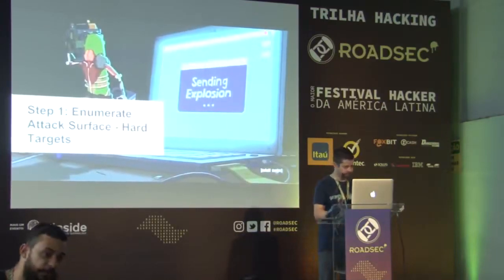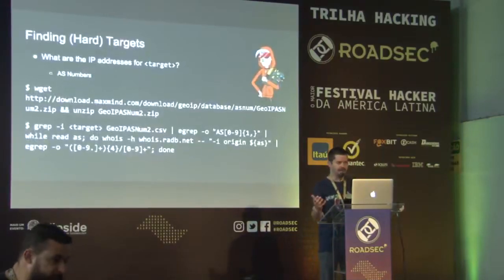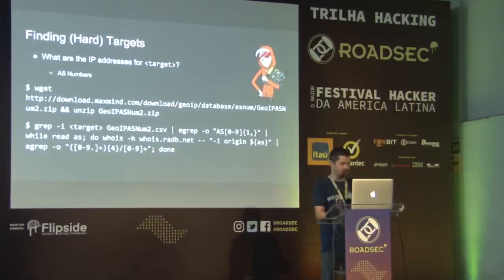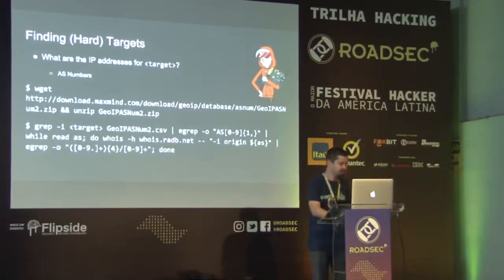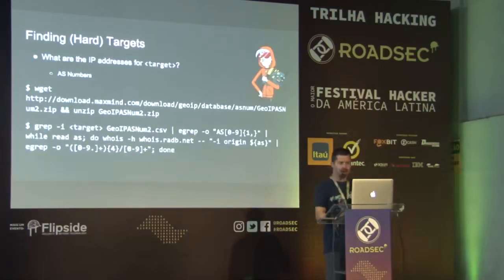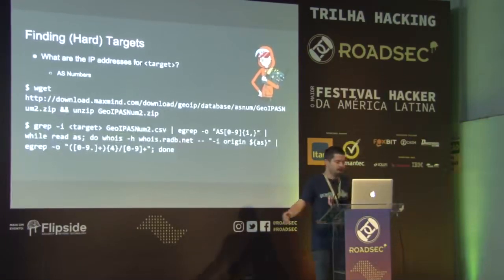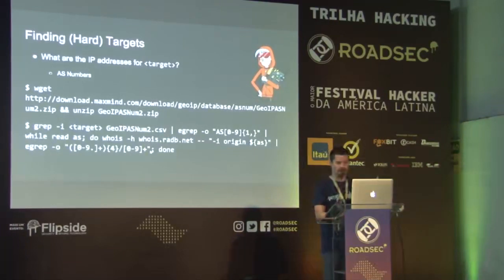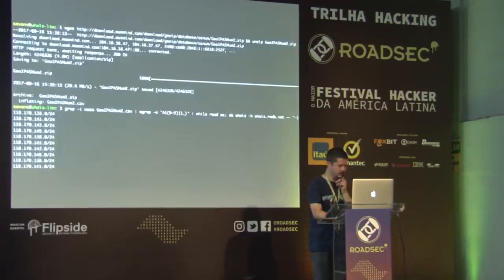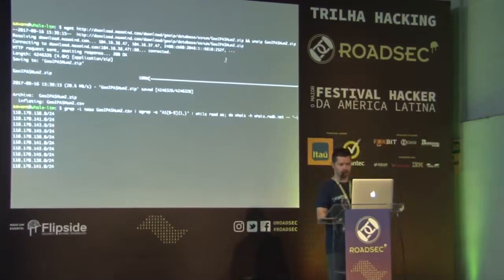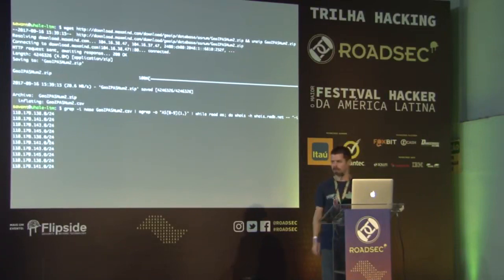First, let's talk about finding systems. We want to find IP addresses for — in this case — NASA, the North American Space Agency. They launch rockets and put people on the moon, and they're way smarter than I am. AS numbers are the hierarchy for how IP addresses are allocated geographically across the planet. If we want to get IP addresses for an organization, we can literally download this database, decompress it, use some bash, and pull out IP addresses for the organization. When we grep for NASA, we get a bunch of IP addresses. Now we have systems that we can look at — and we still haven't sent any packets to NASA.